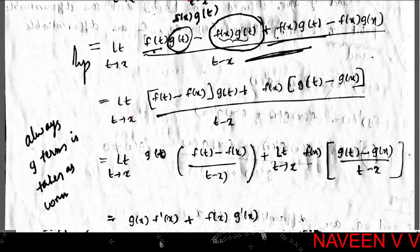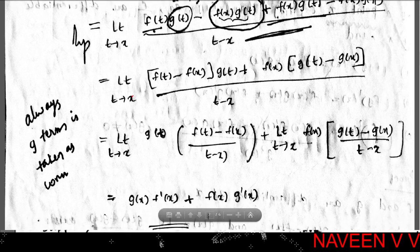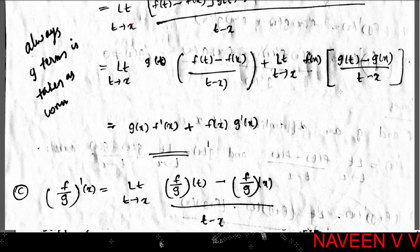This equals limit t→x of g(t)·[f(t) - f(x)] / (t - x) + f(x)·[g(t) - g(x)] / (t - x). Applying the limit sum rule: limit t→x of g(t)·[f(t) - f(x)] / (t - x) + limit t→x of f(x)·[g(t) - g(x)] / (t - x).